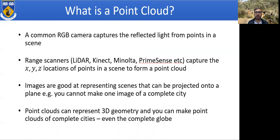A common RGB camera captures the reflected light from points in a scene. Range scanners, such as LiDAR, Kinect, Minolta, and PrimeSense, capture the XYZ locations of points in a scene to form a point cloud. Images are good at representing scenes that can be projected onto a plane. However, you cannot project a complete city onto one plane. Point clouds can represent 3D geometry, and you can make point clouds of complete cities, even the complete globe.